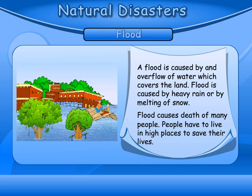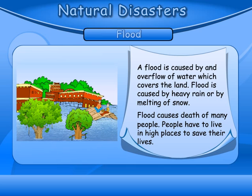Flood: A flood is caused by an overflow of water which covers the land. Flood is caused by heavy rain or by melting of snow. Flood causes the death of many people. People have to live in high places to save their lives.